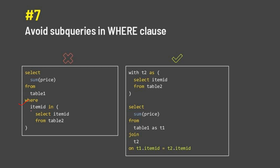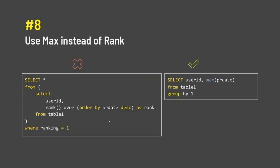Number seven is: in a WHERE statement, always avoid using the IN clause. Instead, always use a CTE (Common Table Expression) approach — follow the CTE approach and avoid using IN inside a WHERE clause. Number eight is: if you need to find a MAX value — whether based on user ID or not — don't use unnecessary window functions. Always avoid using unnecessary window functions and instead use a simple, direct approach.